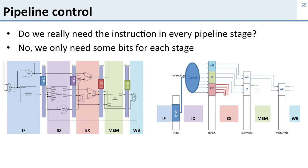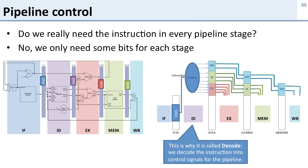In the execute stage we use those bits to figure out what to do and control our combinational logic. The other bits for the memory stage just get forwarded to the next pipeline register along with the writeback bits, as we don't need them in the execute stage. In the memory stage we use the memory control bits and forward the writeback bits on to the last pipeline stage. So now you can see why the second stage is called decode — it's because we're decoding the instruction into control signals which we then send through the pipeline.